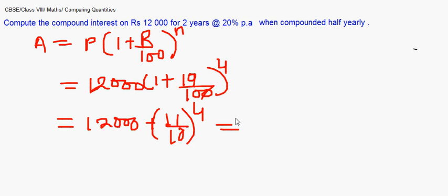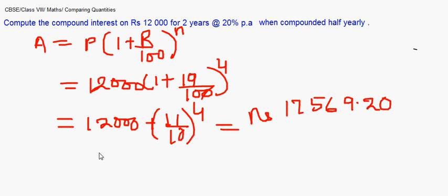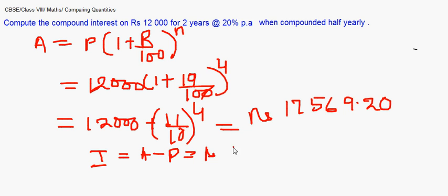You are left with the arithmetic calculation. That gives us an amount of 17,569.20 rupees. The interest is calculated as amount minus principal: 17,569.20 minus 12,000, which gives us 5,569.20 rupees.